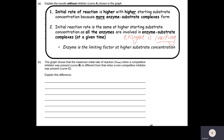For mark point two, question b says the graph shows that the maximum initial reaction rate when a competitive inhibitor was present is different from that when a non-competitive inhibitor was present. So we're going to circle that. The maximum initial reaction rate for a competitive inhibitor is higher than for a non-competitive inhibitor. Let's have a look at the answer.